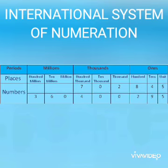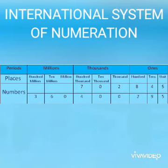Suppose we have the number 3, 6, 0, 4, 0, 0, 2, 9, 5. Five is at the ones place, or unit place. Nine is at the tens place. Two is at the hundreds place. Zero is at the thousands place. Zero is at the ten thousands place. Four is at the hundred thousands place. Zero is at the millions place. Six is at the ten millions place, and three is at the hundred millions place. So our number is 360 million, four hundred thousand, two hundred ninety-five.